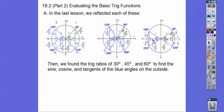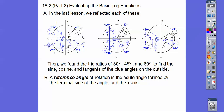The cosine would be adjacent over hypotenuse, which would be negative root 3 over 2 over 1. The tangent would be opposite over adjacent. A reference angle of rotation is the acute angle formed by the terminal side of the angle and the x-axis. So if this is my terminal side for 120 degrees, then the reference angle is this acute angle over here — the one that's less than 90. So it's just 60 degrees.